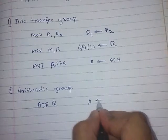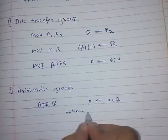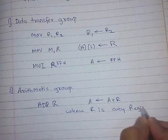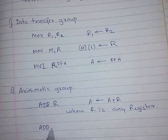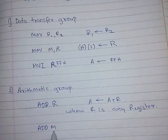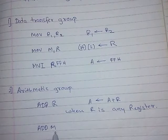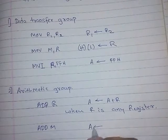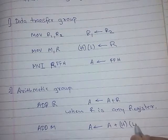The ADD R instruction means: add the content of register R into the accumulator. So the operation will be: A = A + R, where R is any register. ADD M will add the data of the memory location addressed by the H-L pair with the accumulator. So A = A + [HL].